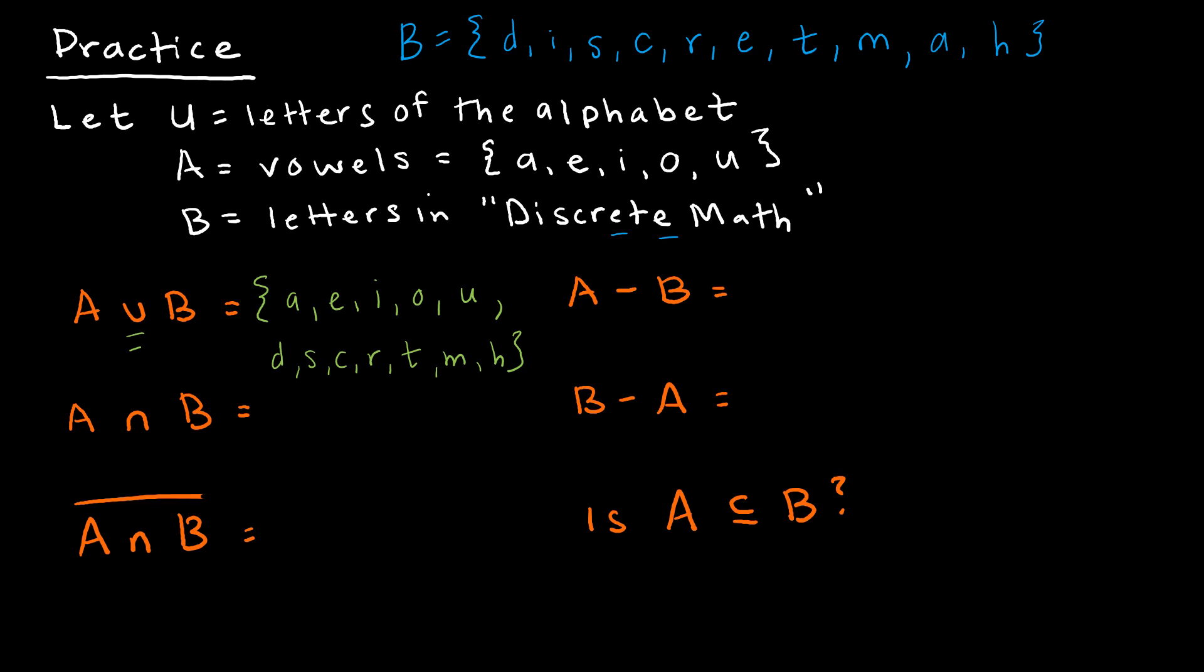The intersection would be only those elements that are in both A and in B. So I can see here I've got an A in both sets. I've got an E in both sets. I've got an I in both sets. I don't have an O, and I don't have a U. So the intersection would just be A, E, I. And the O and U are not contained in the word discrete math.